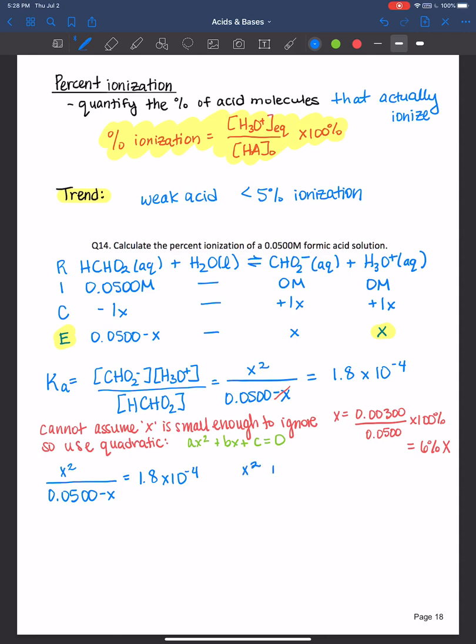It would be x² + 1.8 × 10⁻⁴x - 9 × 10⁻⁶ = 0. So make sure you feel comfortable rearranging this equation to get it into the quadratic form. Now a is 1, b is 1.8 × 10⁻⁴, and c is -9 × 10⁻⁶. The quadratic formula is -b ± √(b² - 4ac) / 2a. Be sure to know that formula to help you solve for x.